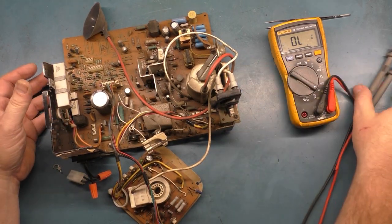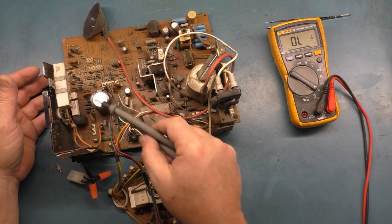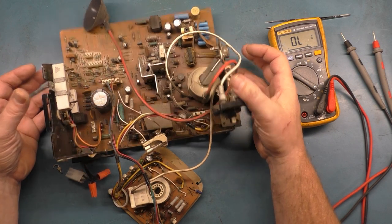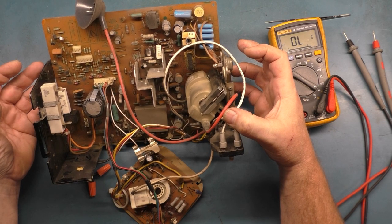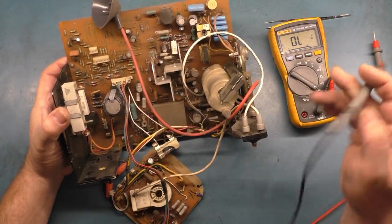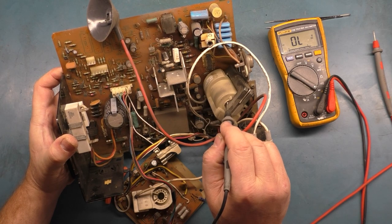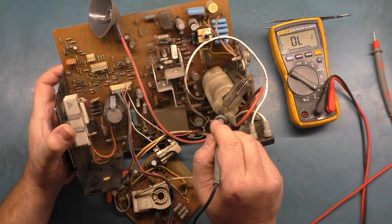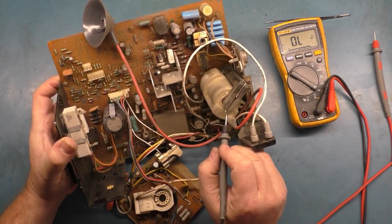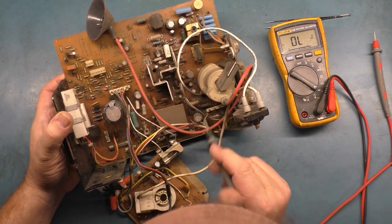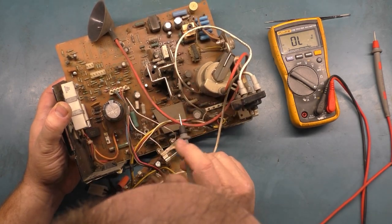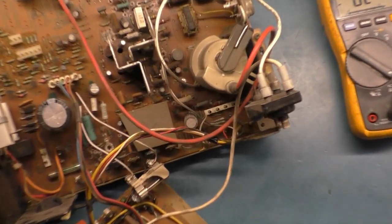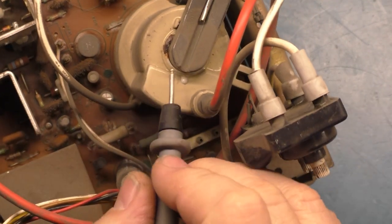Usually when the flyback fails, it takes out F901. I'm just looking here, we've got some black goo. I don't know if this is the glue for the ferrite core to keep it in place, but I don't think that's supposed to be like that. Very suspect. And then we have this white mass here. This is very likely just a bad flyback.